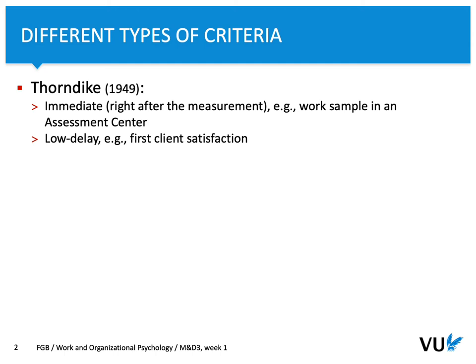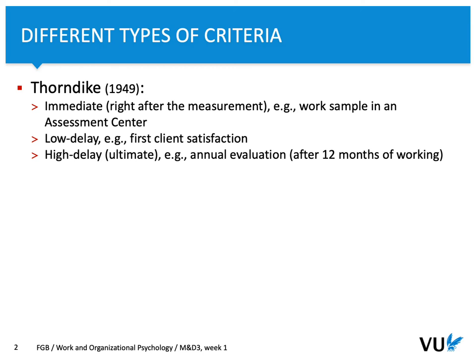On the other hand, we may have a low delay criterion. Let's say you hire 20 out of 200 applicants, and later you examine whether there is a relationship between the personality test used during selection and client satisfaction — that can be seen as a measure of work performance. You may also have a high delay criterion: for example, work performance after 12 months assessed as part of an annual evaluation.